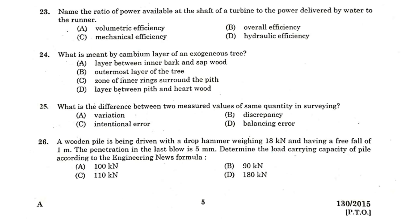Name the ratio of power available at the shaft of a turbine to the power delivered by water to the runner. Mechanical efficiency. What is meant by cambium layer of an exogenous tree? It is a layer between the inner bark and sap root. What is the difference between two measured values of same quantity in surveying? Discrepancy.